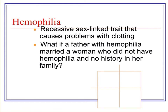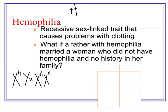Another X-linked trait that is recessive and often talked about is hemophilia. Hemophilia is a blood clotting disorder. One of you might research this for your genetic disorder project. There are some interesting connections with royal families. If a father with hemophilia — using a little h to represent the recessive allele — marries a woman who does not have hemophilia and has no history of it in her family, we use a big H for the dominant allele representing normal blood clotting, and little h for the hemophilia allele.